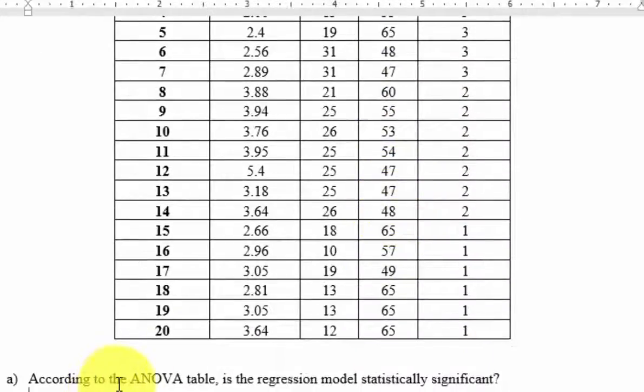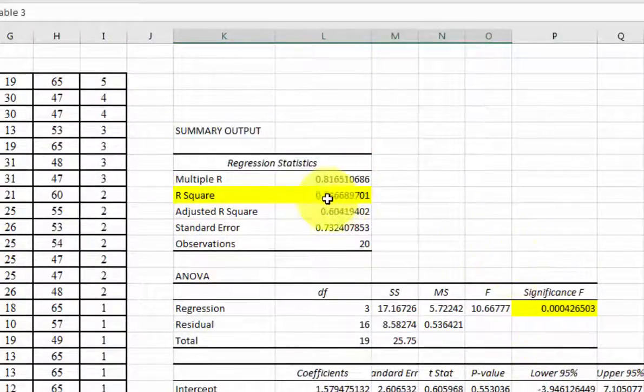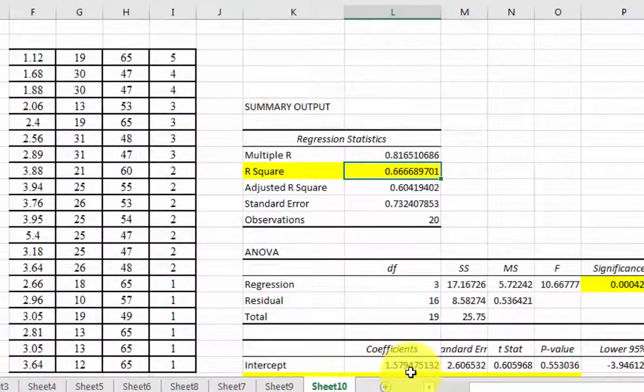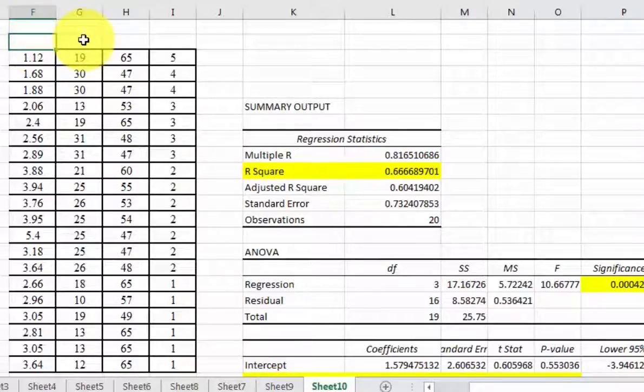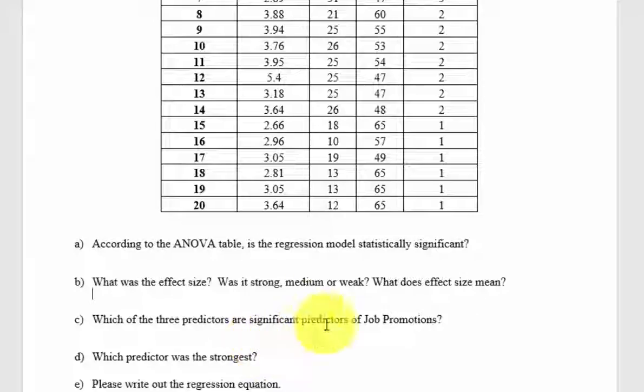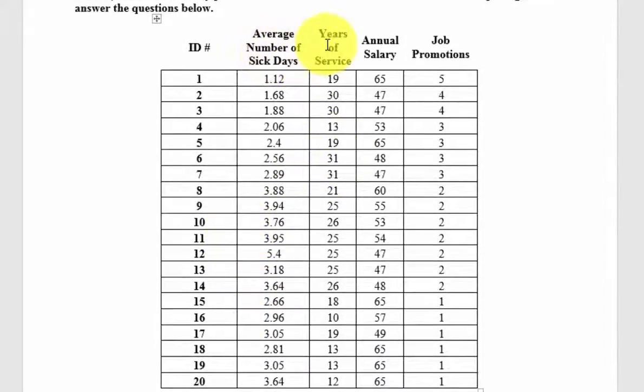So let's answer these questions. Yes, it was a significant regression model. The effect size was 0.666. So that means, in other words, you can explain about two-thirds of the variance in job promotions based on the number of sick days a person takes and how long they've been working there. Again, their salary has nothing to do with this. So the only two that were significant were number of sick days and years of service.